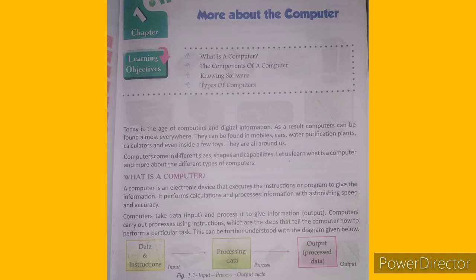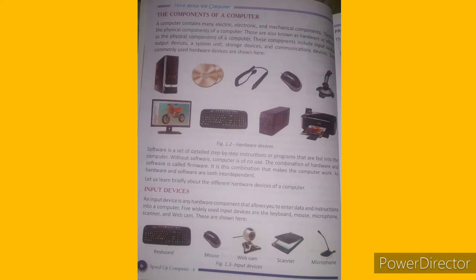This can be further understood with the diagram given below. Computers take data, process it to information, and then give output. First, we get data input. Then, we get data in the process. After that, we get output.